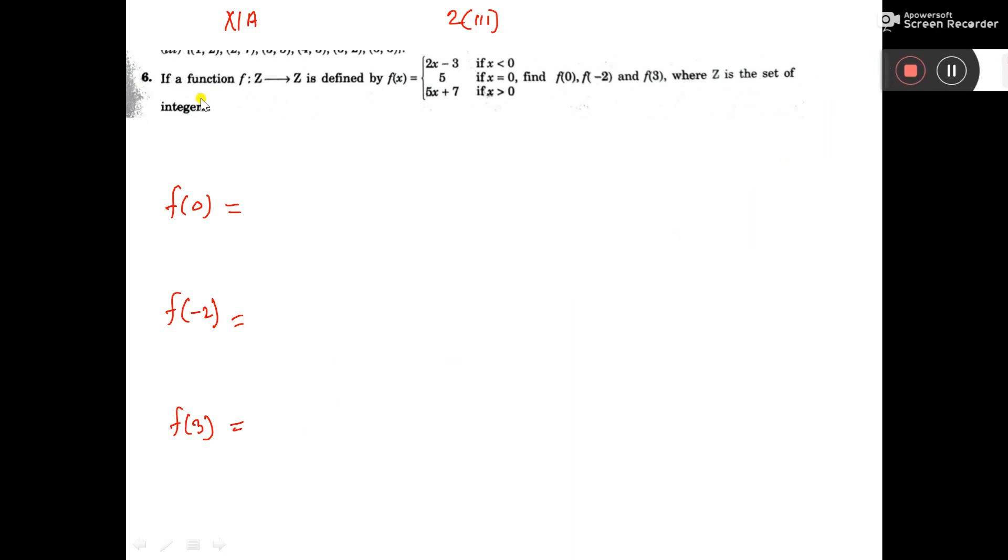This is the question: if a function f from Z to Z, that is, a set's element will be Z (integer), and b set's element also integer, that is why Z to Z. Define by f(x) equal to this.